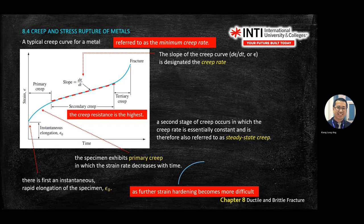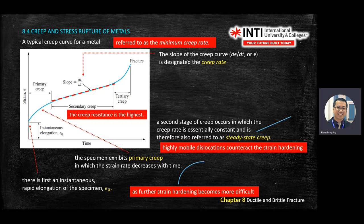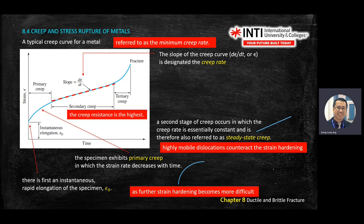When you have a linear form, in material science what happens internally is there is high mobile dislocation counteracting the strain hardening. So there is a counter-attack to resist the deformation.